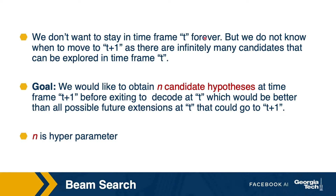We don't want to stay in time frame t forever, but we do not know when to move to t plus one, as there are infinitely many candidates that can be explored at time frame t. Beam search allows us to make a choice better than the local optimal choice while still staying within a computational time bound. The goal of beam search is to obtain n candidate hypotheses at time frame t plus one before exiting, which would be better than all future extensions at t that could go to t plus one.